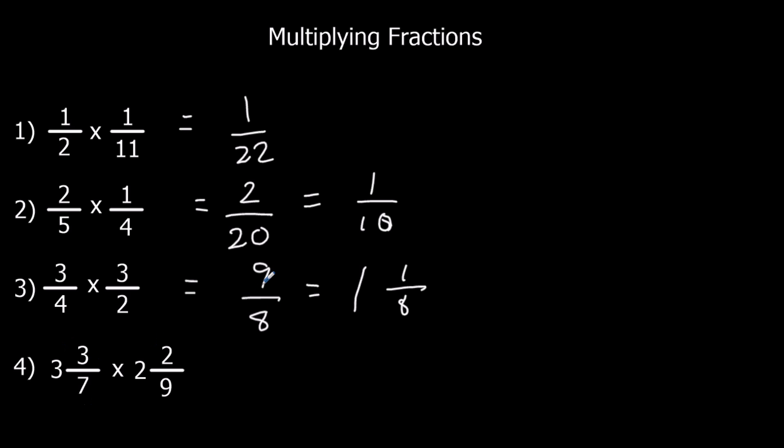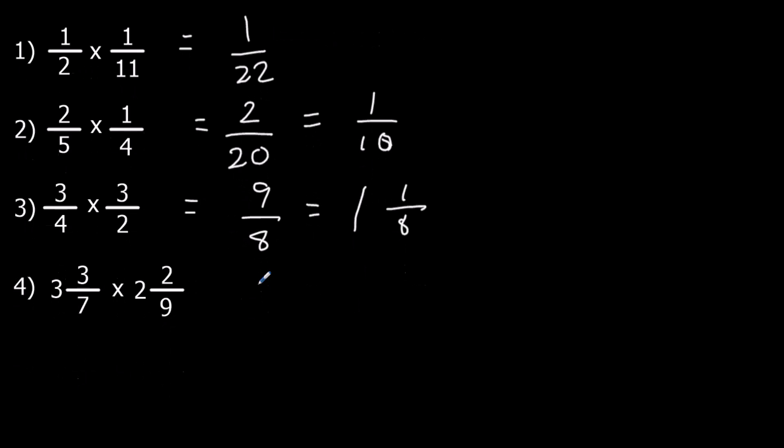Here I've got to change them first. So let's change them to top heavies. So 3 times 7, 21, plus 3, 24. 2 nines are 18, plus 2 is 20, over 9.